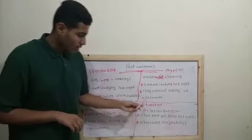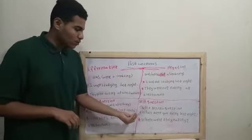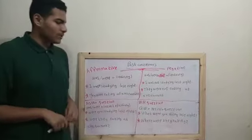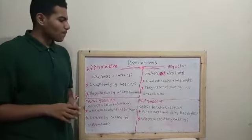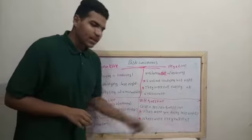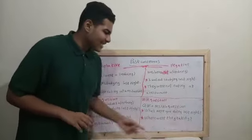And the WH question consists of a question word plus the formation of the yes or no question. Let's take an example. What were you doing last night? Where were they eating?